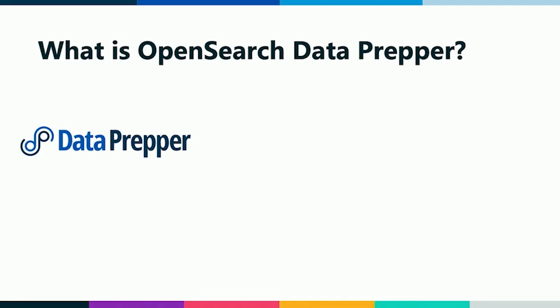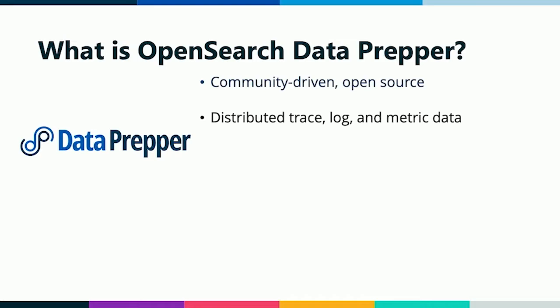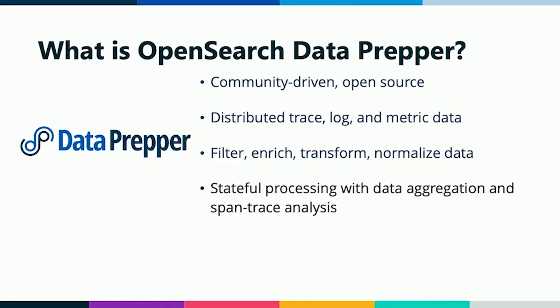For these reasons and more, our team created Data Prepper. Data Prepper is an open source project, Apache 2 licensed, and part of the OpenSearch umbrella. It's a last mile data collector built specifically for observability use cases. We support the three major signals — traces, logs, and metric data. You can use Data Prepper to achieve the data quality I was talking about: filter data out, enrich your data, and transform it so that it looks the way you need it to.